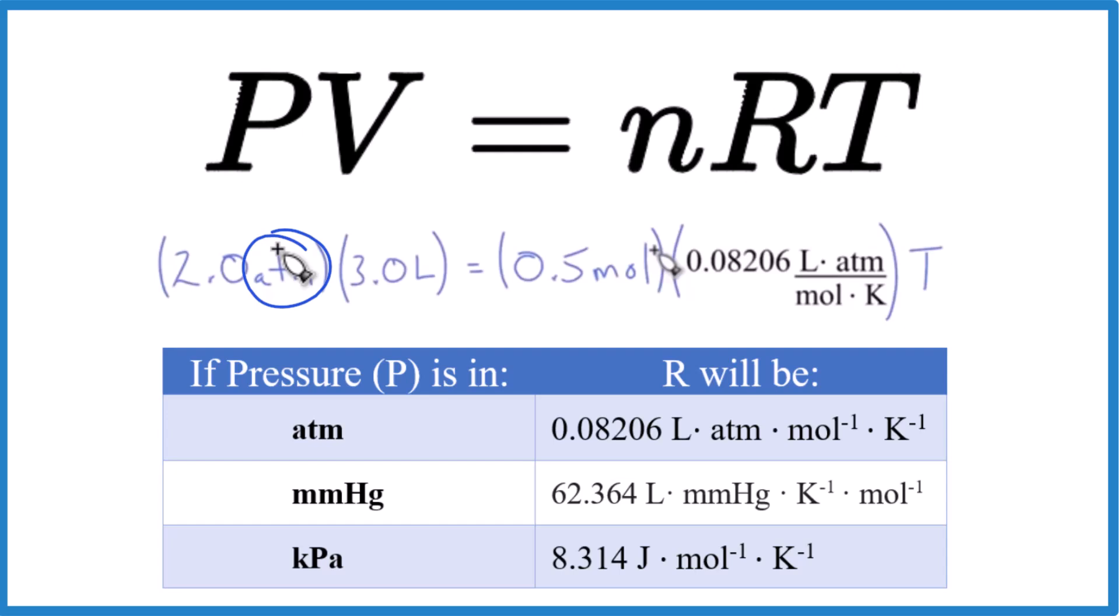And usually you're given a table with all these for tests. So in short, look at the pressure in the problem here, the units, choose the right value for R. Everything should cancel out, and it should fix your units. Let's do some problems.